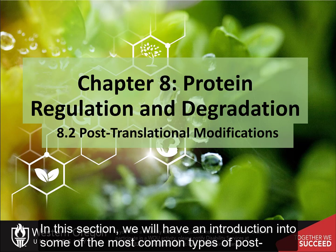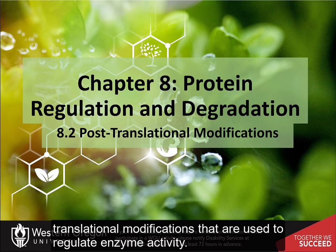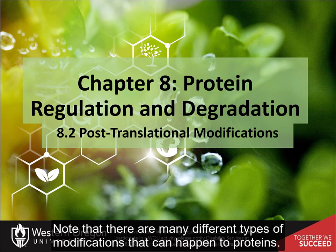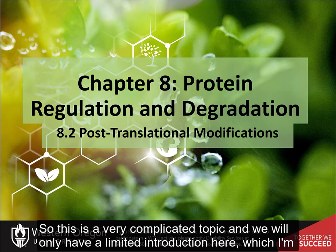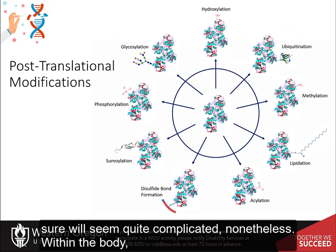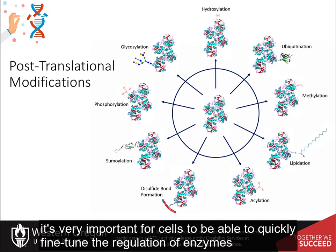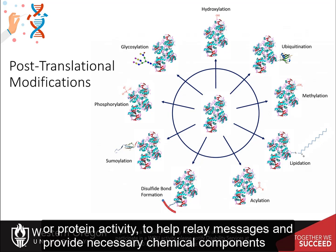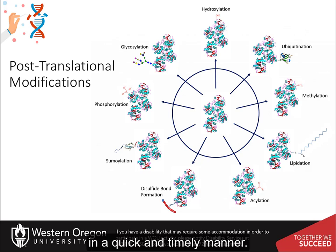In this section, we will have an introduction into some of the most common types of post-translational modifications that are used to regulate enzyme activity. Note that there are many different types of modifications that can happen to proteins, making this a very complicated topic with only a limited introduction here. Within the body, it is very important for cells to be able to quickly fine-tune the regulation of enzymes or protein activity to help relay messages and provide necessary chemical components in a quick and timely manner.